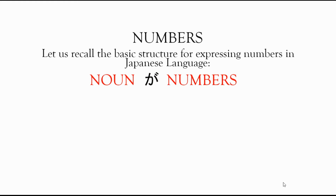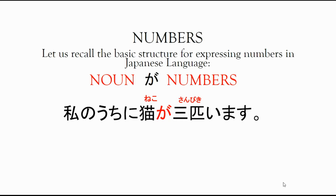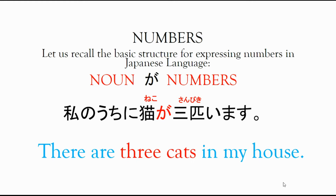For noun ga numbers, for example: watashi no ouchi ni, neko ga, sanbiki imasu. This means there are three cats in my house. The noun here is neko, and the number is sanbiki — that's the counter we use for animals.